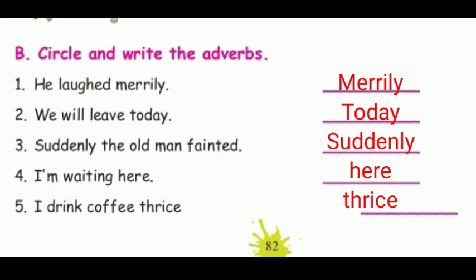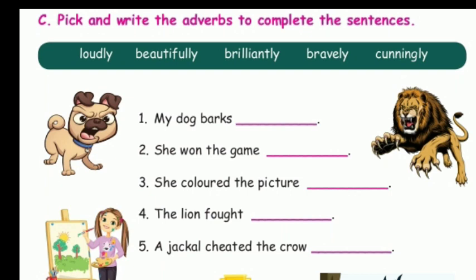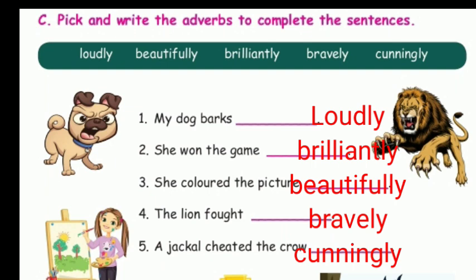Section C — Pick and write the adverbs to complete the sentences. The words given are: loudly, beautifully, brilliantly, bravely, cunningly. My dog barks loudly. She won the game brilliantly. She colored the picture beautifully. The lion fought bravely. A jackal cheated the crow cunningly.